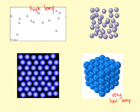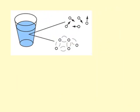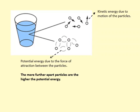So temperature is a measure of the average kinetic energy of the particles. But substances have two types of energy. First, they have kinetic energy due to the motion of the particles, but they also have potential energy. And this is due to the force of attraction between the particles. And the further apart the particles are, the higher the potential energy.